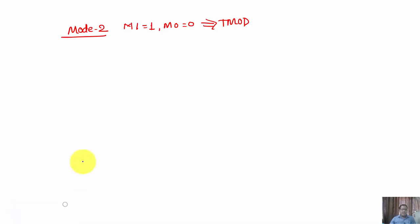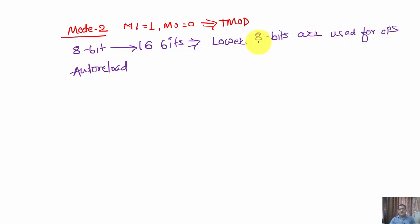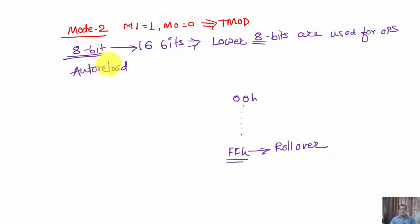In 8-bit auto reload mode, out of the 16 bits available, only the lower 8 bits are used for the operation. Hence the minimum value is 00h and the maximum value that can be reached is FFh. After FFh, a rollover occurs.